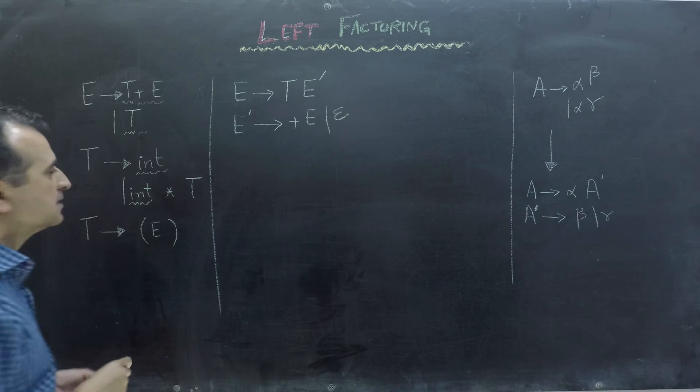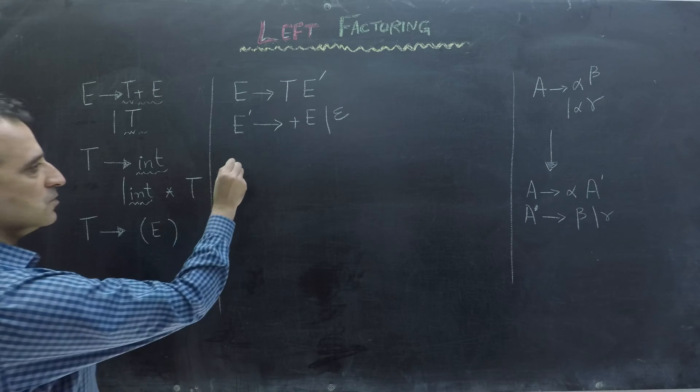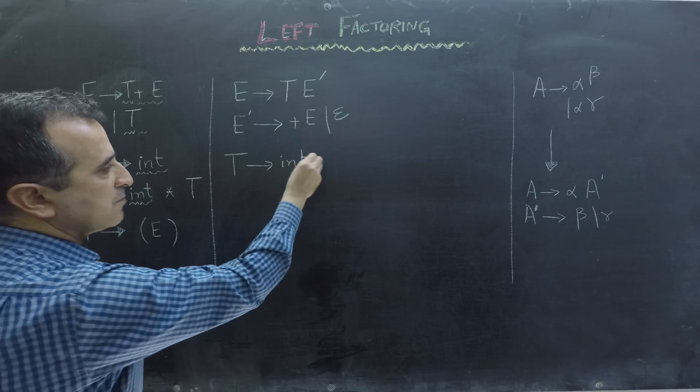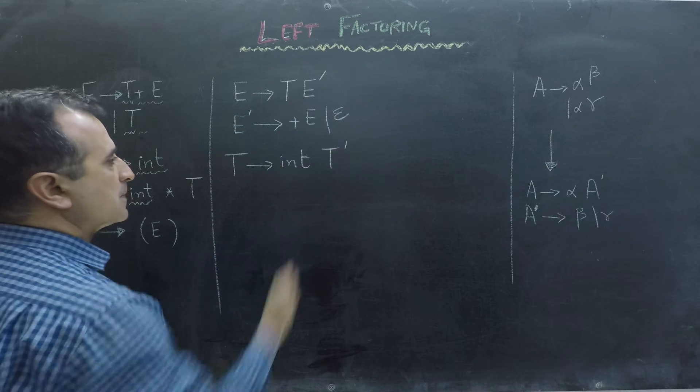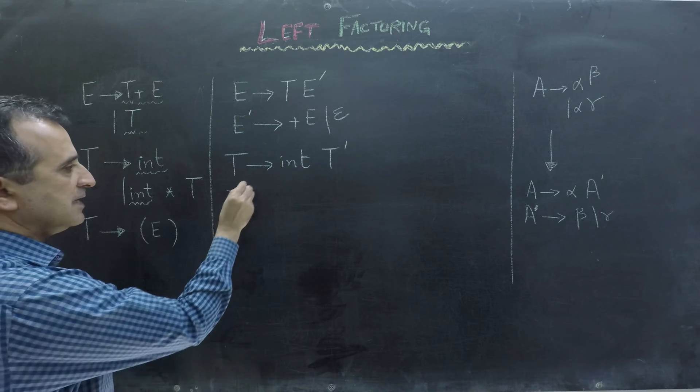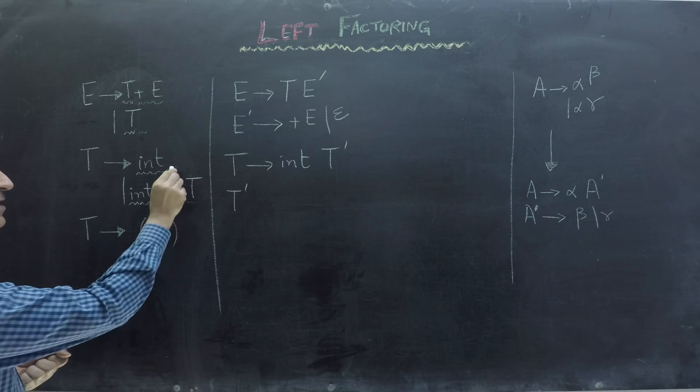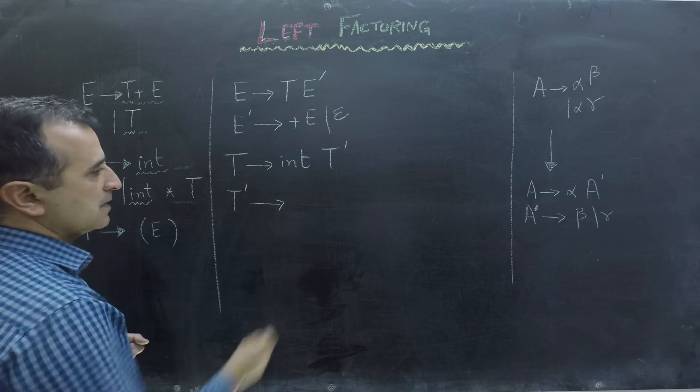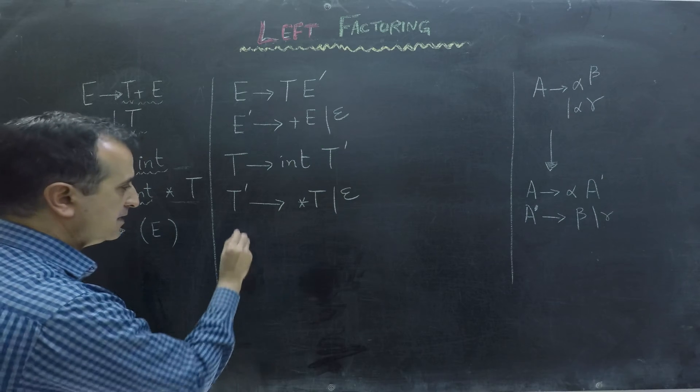Similarly, now we have to perform left factoring on the non-terminal T. So T goes to int. We have to write common prefix once, and then we have to write T bar. And for T bar, we have to first write times T, and then we can write epsilon. So T bar goes to times T or epsilon.